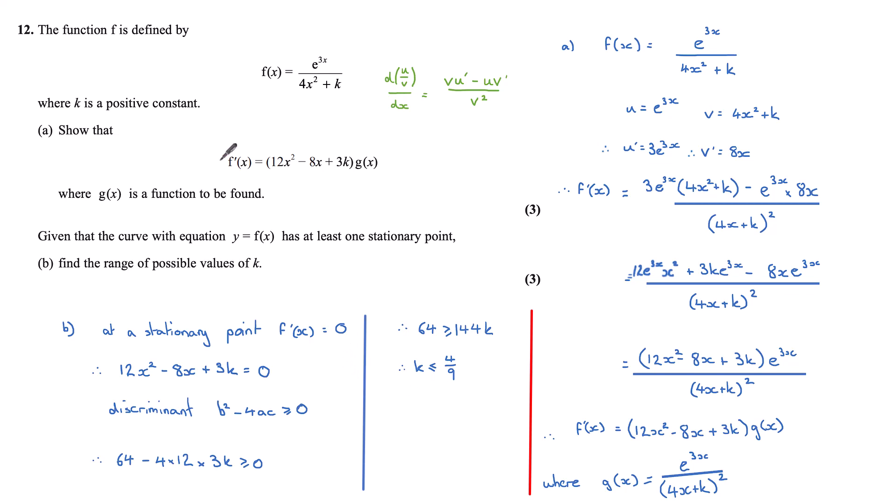Now, of course, k we're told is a positive constant. So finally, for k, it should be greater than zero and less than or equal to 4/9.